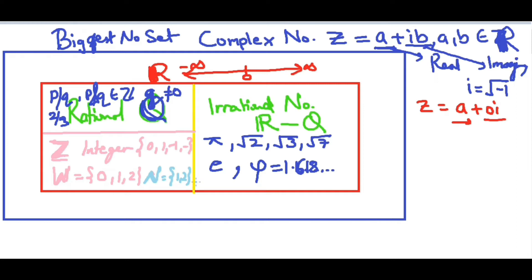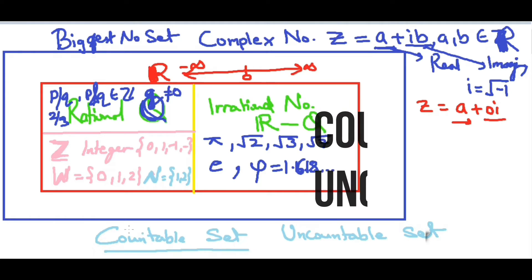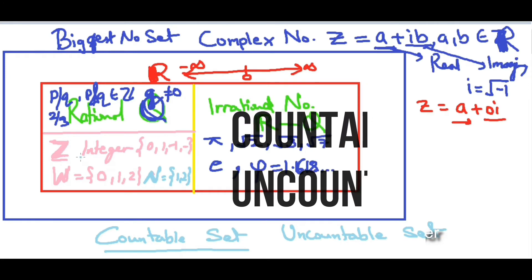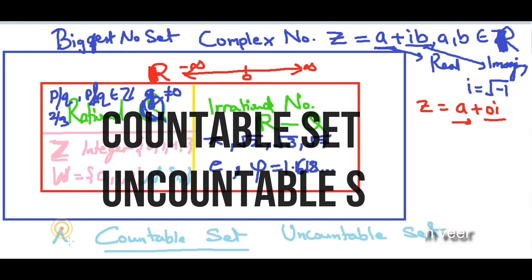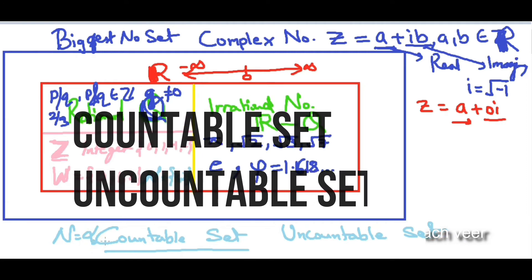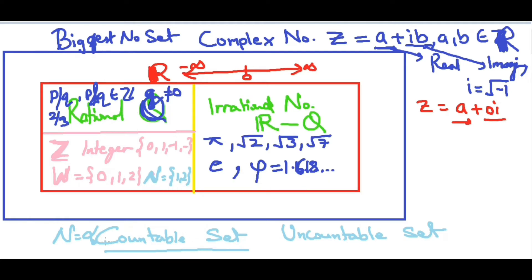There is a specific word in mathematics: countable set and uncountable set. Natural numbers, whole numbers, and integers are all countable sets. But are rational and irrational numbers — i.e., real numbers — uncountable? Yes, they are uncountable in mathematics. A set is countable if a function can be defined mapping it to natural number sequences; otherwise it is uncountable.